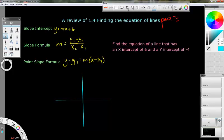Alright, we're reviewing 1-4, finding equations of lines. Here are the three formulas that you will need to do this stuff, and you use them in different places. There isn't just one way to do it, and there isn't only one way, one type of problem. So there's lots of different types. This is part two.